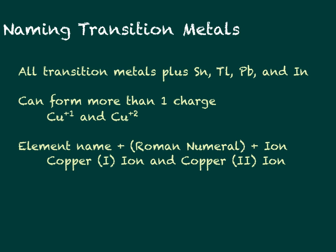When we name transition metals, it's a little different. Recall that the periodic table has an S section, a D section, and a P section. The transition metals in the D section can have more than one charge. All transition metals, plus tin (Sn), thallium (Tl), lead (Pb), and indium (In), can have more than one type of charge.